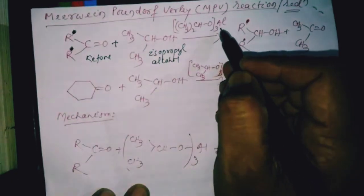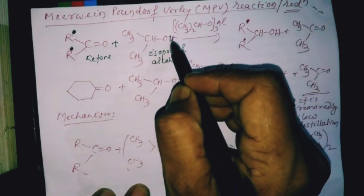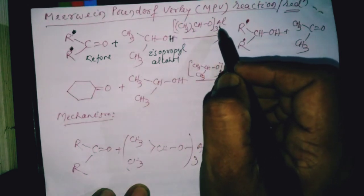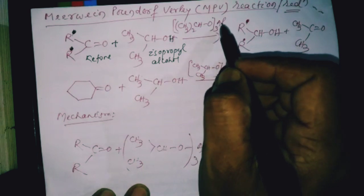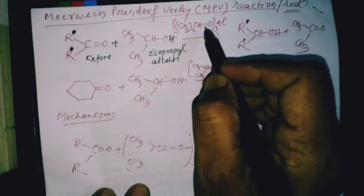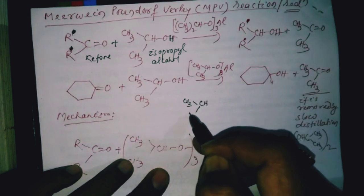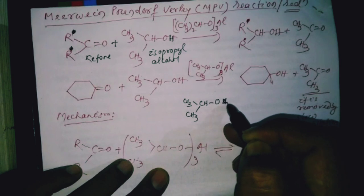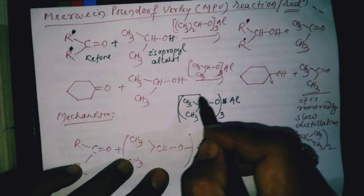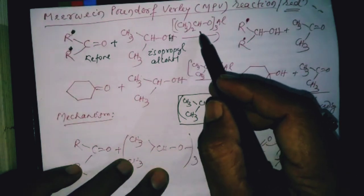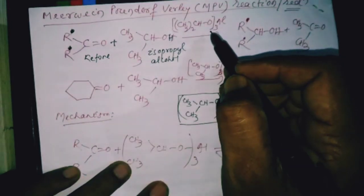We are going to add these two compounds in the presence of aluminum isopropoxide. Isopropoxide means: take isopropyl alcohol (CH3)2CHOH, remove the H from the OH group and put Al in its place. Since the valence of aluminum is 3, three isopropoxide groups will be attached to Al — giving Al(OCH(CH3)2)3. This is aluminum isopropoxide, and it is a reducing agent.